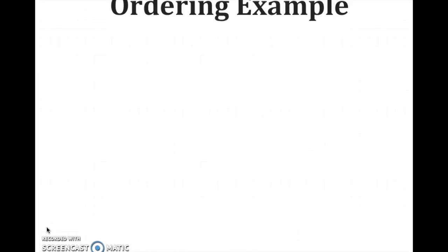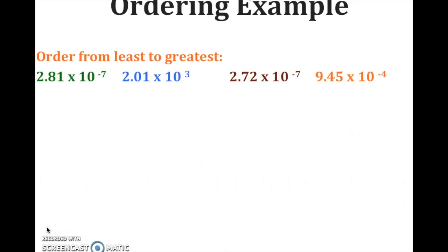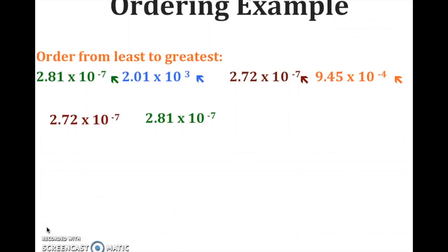Now let's look at an ordering example — ordering from least to greatest. Here are my numbers: 2.81 times 10 to the negative 7th, 2.01 times 10 to the 3rd, 2.72 times 10 to the negative 7th, and 9.45 times 10 to the negative 4th. Two exponents are the same (negative 7), so compare those decimals like money: $2.81 versus $2.72. The order from least to greatest is: 2.72×10⁻⁷, 2.81×10⁻⁷, 9.45×10⁻⁴, 2.01×10³.